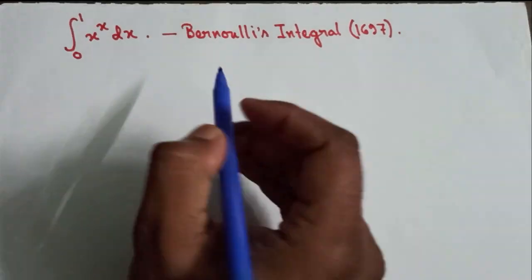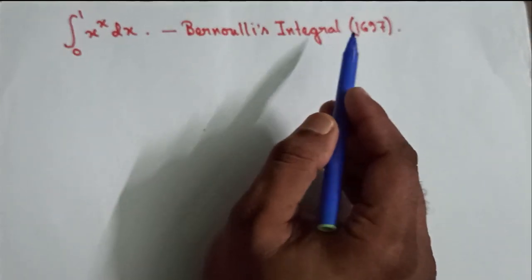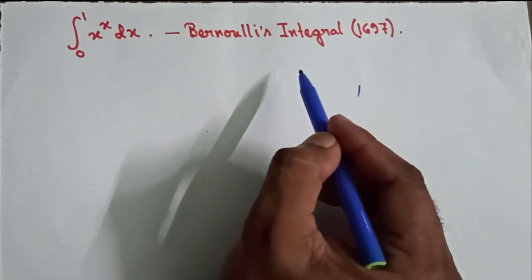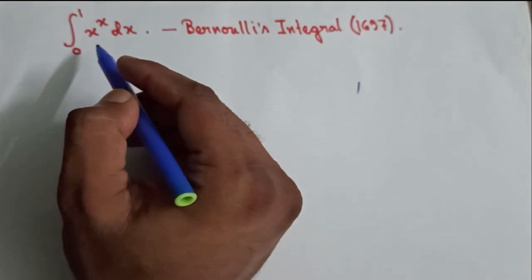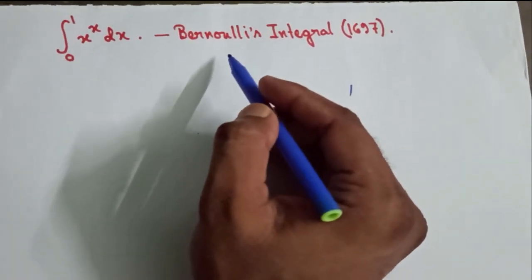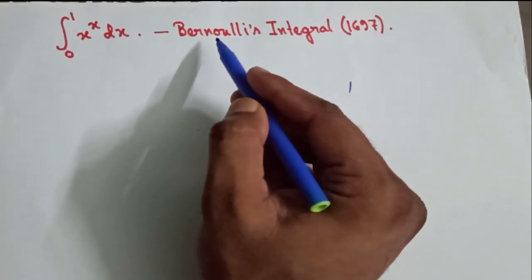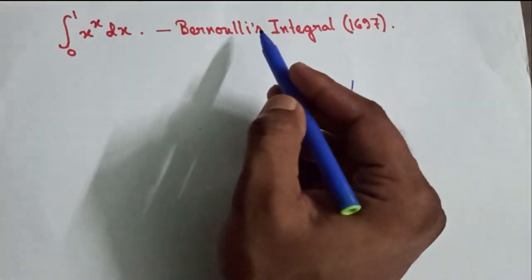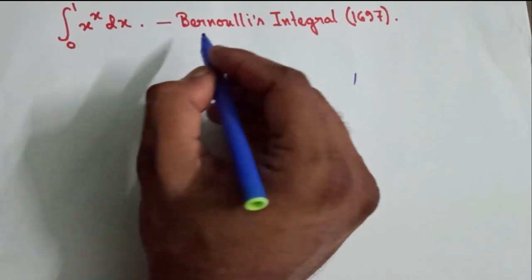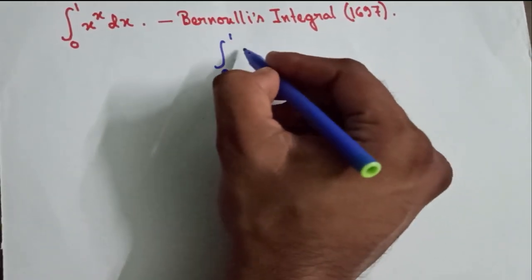Today we are going to discuss Bernoulli's integral, which was solved by Bernoulli himself in the year 1697. We are not going to solve it the way Bernoulli solved it; we are going to use the gamma function indirectly, which Bernoulli did by the help of a reduction formula.